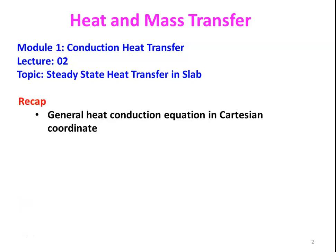We will recap from the previous lecture. In the previous lecture, we discussed the derivation of the heat conduction equation in Cartesian coordinates and simplified the equation for different basic situations: one-dimensional steady state heat transfer in a slab without internal heat generation, with internal heat generation, and without heat generation. We simplified the general equation for different basic situations.